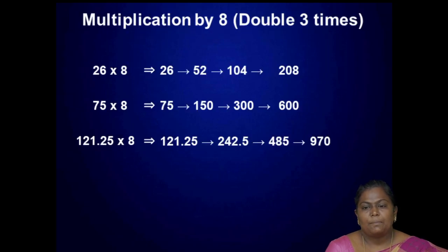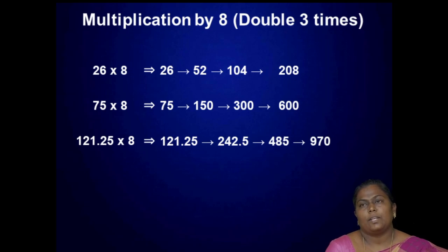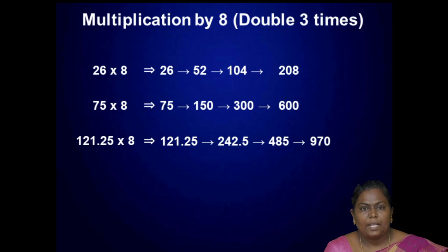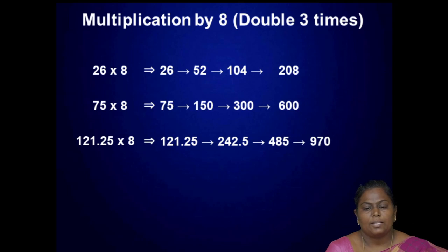Next, multiplication by 8. Here 8 is 2 into 2 into 2, so we double 3 times. For given number 26 multiplied by 8: 26, then 52, then 104 — double 3 times, so 208.